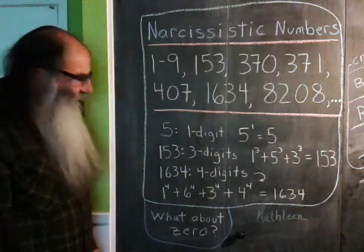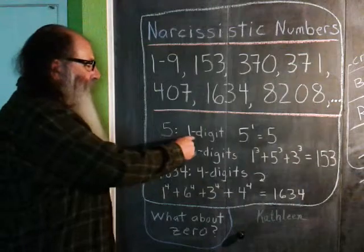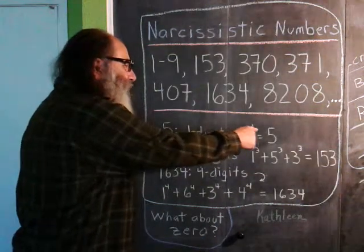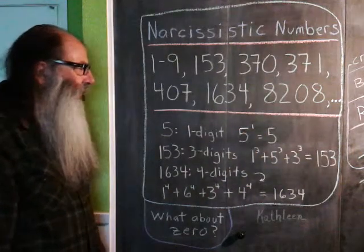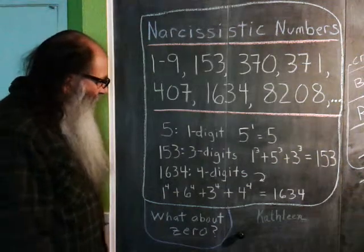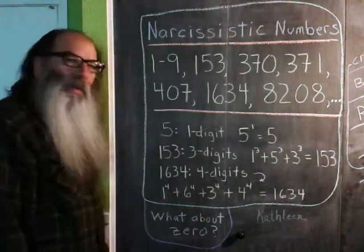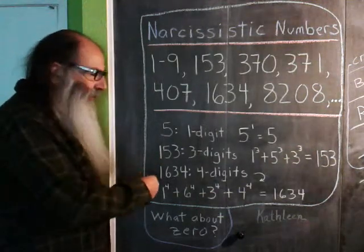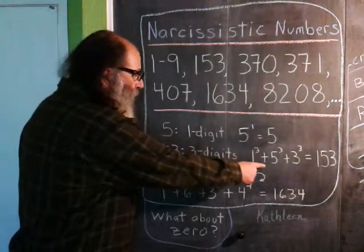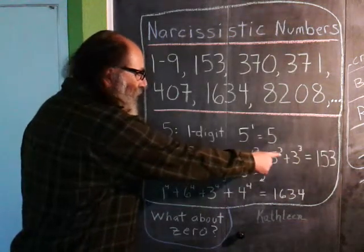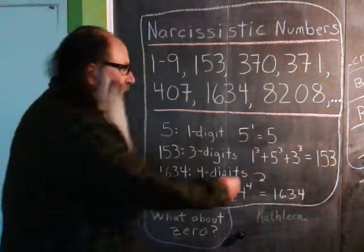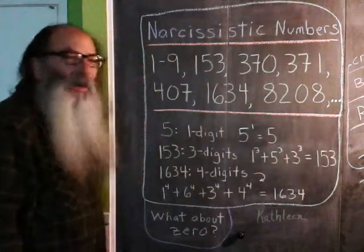And I've got some examples here. 5 consists of 1 digit, so that digit, 5, raised to the first power is 5. So 5 is Narcissistic, as are 1 through 9. Let's do 153. The number 153 has 3 digits, so the digit 1 raised to the third power plus the digit 5 raised to the third power plus 3 raised to the third power, if we go ahead and evaluate that, it evaluates to 153.